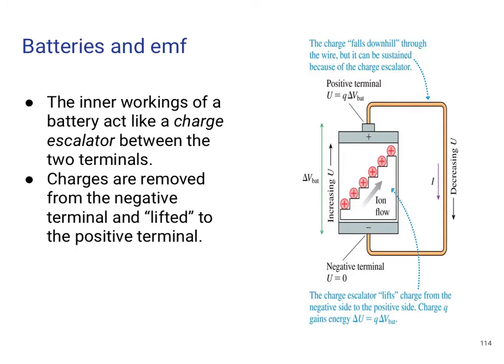So we're going to talk about a battery. The inner workings of the battery — the simplest way we can describe it is thinking about an escalator. When you're on an escalator, say you go to the mall and you're on the first floor and want to get up to the second floor — you take the escalator. It gives you gravitational potential energy. A battery works the same way. On the right I have a picture: the battery acts as a charge escalator, bringing charges from the negative plate to the positive plate. It gives them electrical potential energy, taking the positive charges from the negative plate and bringing them up to the positive plate so they can go through the circuit.